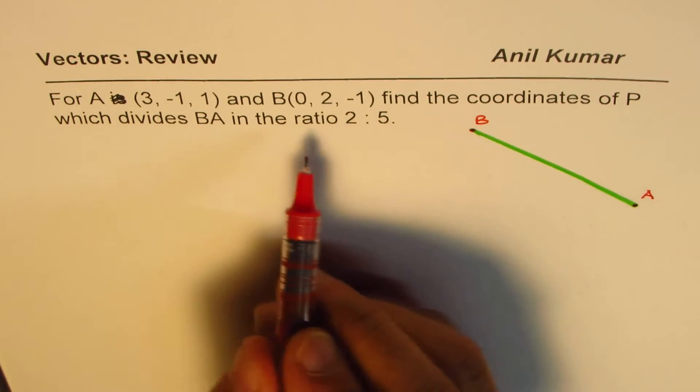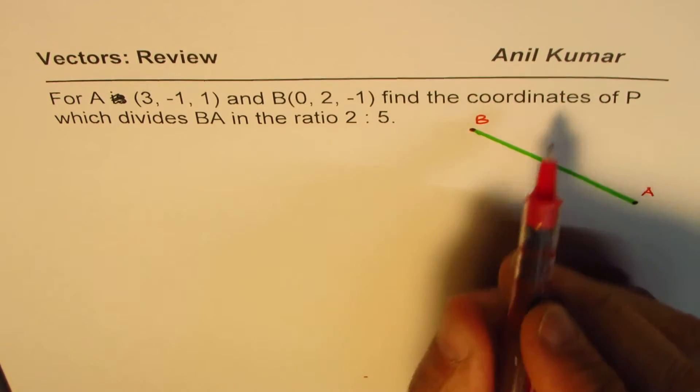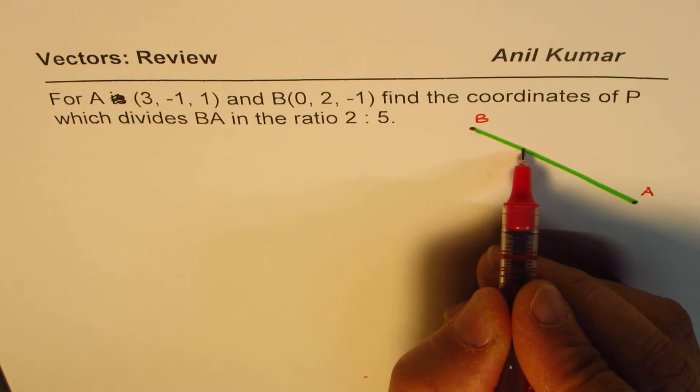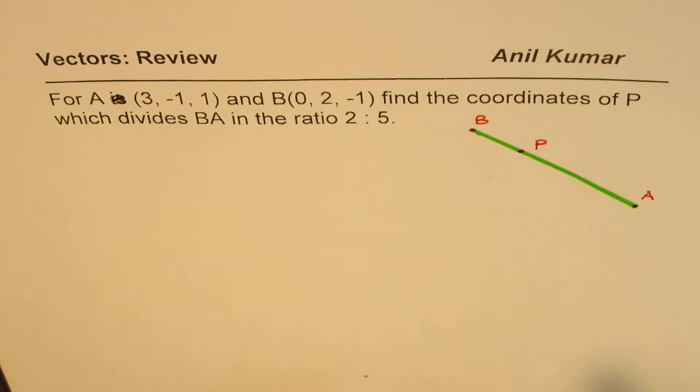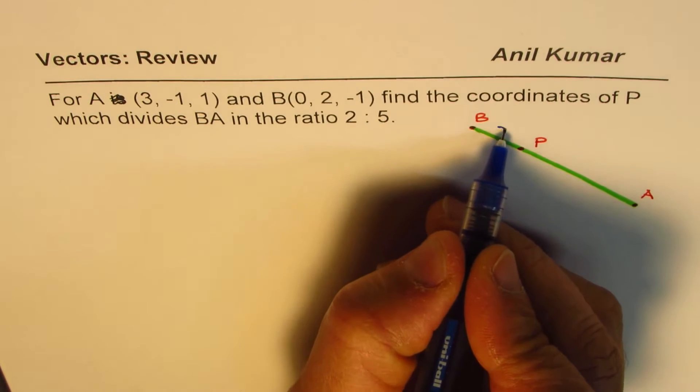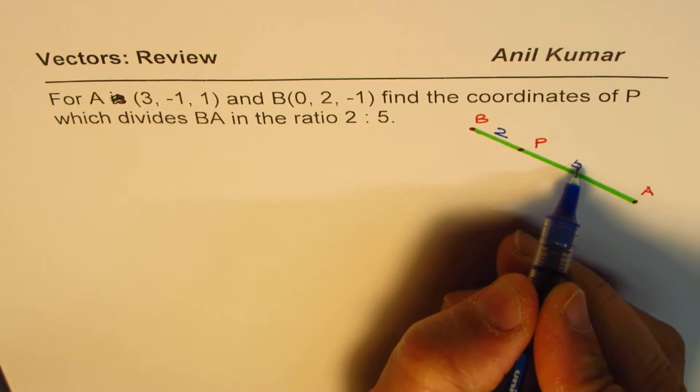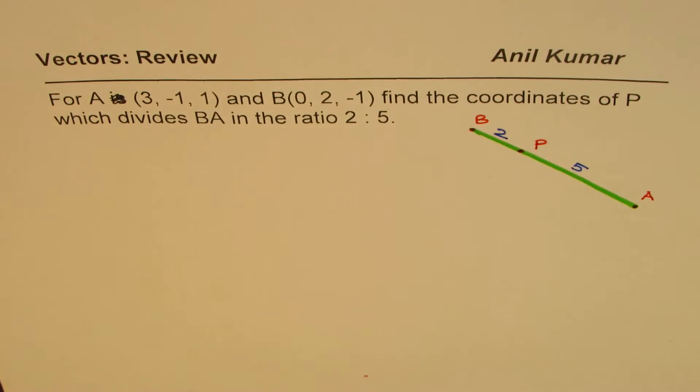Let me consider this point to be B and this point to be A. We need to divide it in the ratio of 2:5, and some point P, let us say point P is right there, which divides BA in the ratio of 2:5.